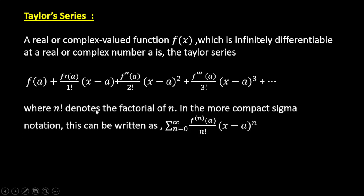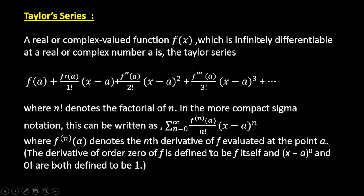So here n! denotes the factorial of n. In the more compact sigma notation, this can be written as Σ(n=0 to ∞) f⁽ⁿ⁾(a), that is the nth derivative of f evaluated at the point a.